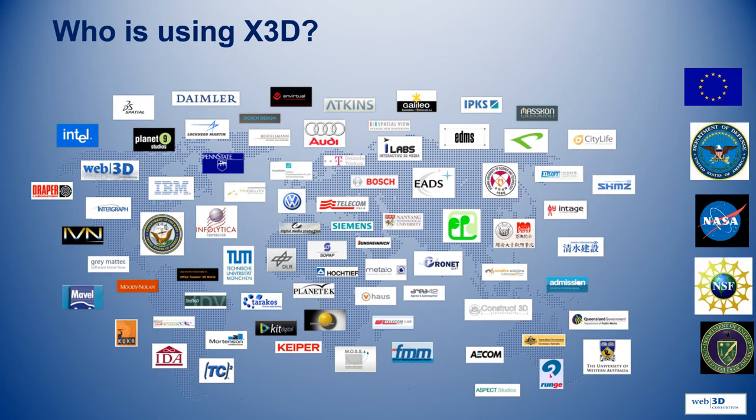Who is using X3D? There are several companies — as you can see, many Fortune 500 companies are using X3D, along with several government organizations including NIST, NASA, and the Navy. The Army is using it, and several other departments within the Department of Defense are using X3D.